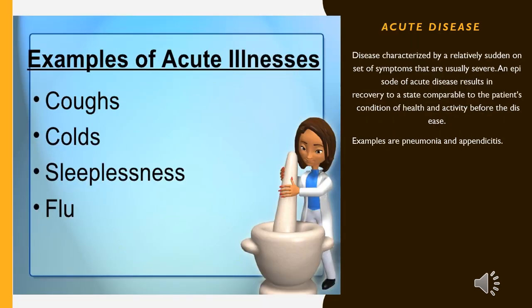Acute disease. Disease characterized by a relatively sudden onset of symptoms that are usually severe. An episode of acute disease results in recovery to a state comparable to the patient's condition of health and activity before the disease. Examples are pneumonia and appendicitis.